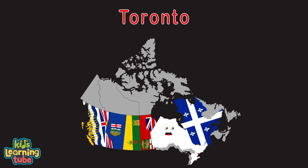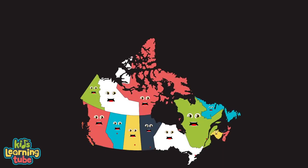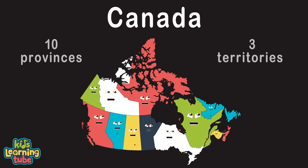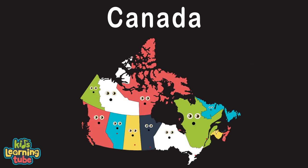I'm Ontario — my capital is Toronto. The Hudson Bay's to my north and the US to the south. Half of Lake Ontario sits in my province — it's one of the five Great Lakes and four of them border me. We are Canada, made up of ten provinces and three territories with capitals in all.